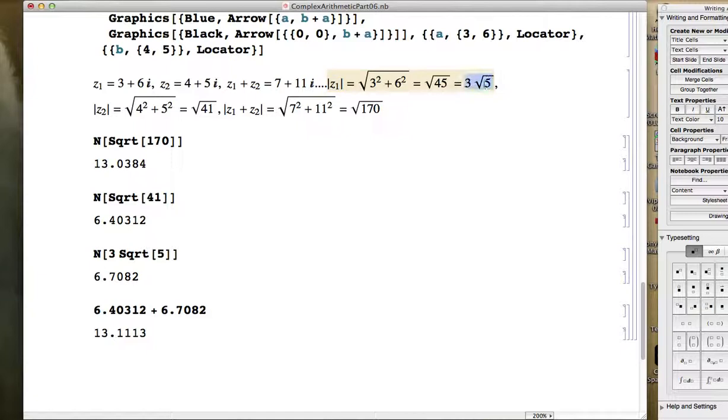In this case, 3 root 5. The modulus of Z2 is root 41, and the modulus of Z1 plus Z2 is root 170. And yes, square root of 170 is less than or equal to the square root of 45 plus the square root of 41, less than or equal to the sum of the length of the individual sides.